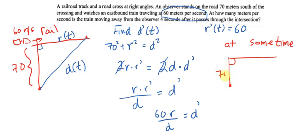And this length is 60 times 4, or 240. Now why? Well, because it says four seconds after it passes through the intersection.